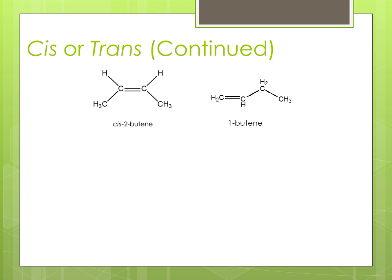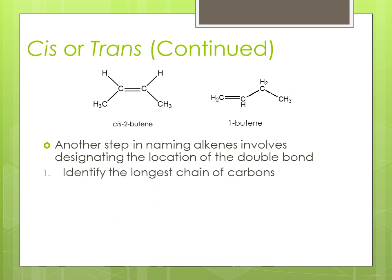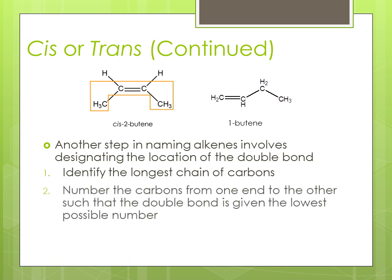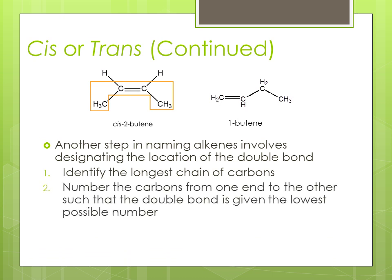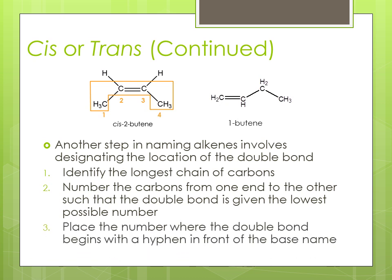Cis or trans continued. Another step in naming alkenes involves designating the location of the double bond. The first step should be identifying the longest carbon chain. The second step should be to number the carbons from one end to the other such that the double bond is given the lowest possible number. Lastly, place the number where the double bond begins with a hyphen in front of the name.